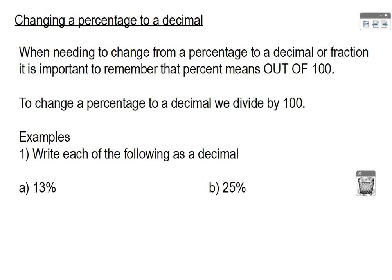We've looked at some conversions that we need to learn, but sometimes there may be conversions we don't know off the top of our head. We're going to look at changing from a percentage to a decimal. When changing a percentage to a decimal or to a fraction, always remember that percent means out of a hundred. So to change a percentage to a decimal, we need to divide by 100. Write each of the following as a decimal. We've got first of all 13% — remember, percent means out of a hundred, so 13% can be written as 13 out of 100.